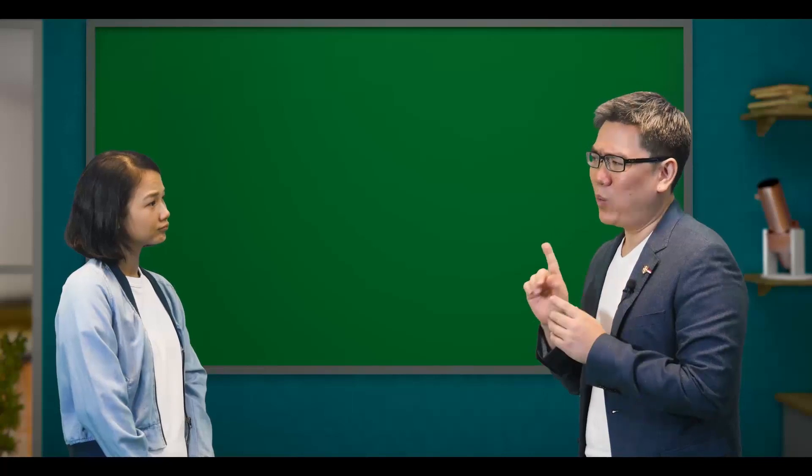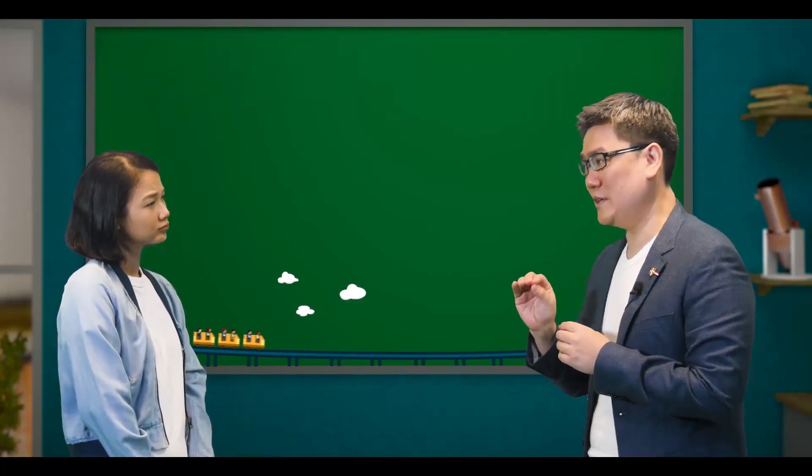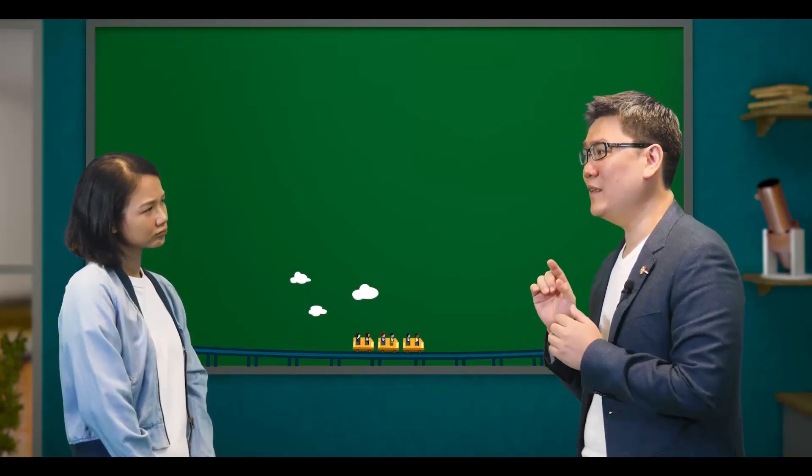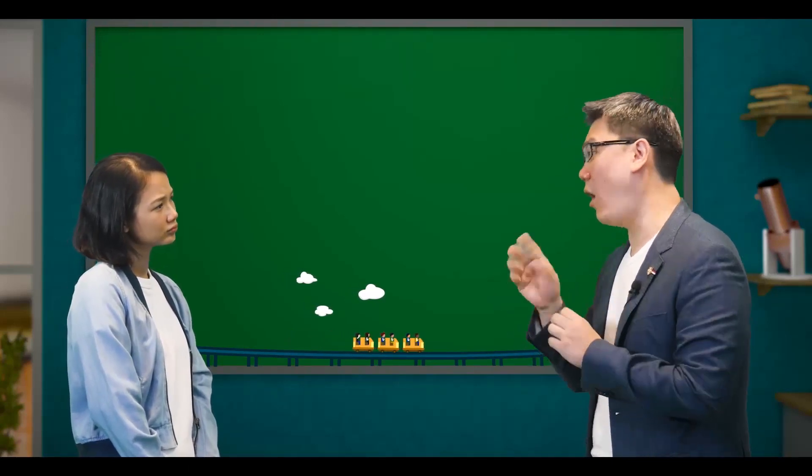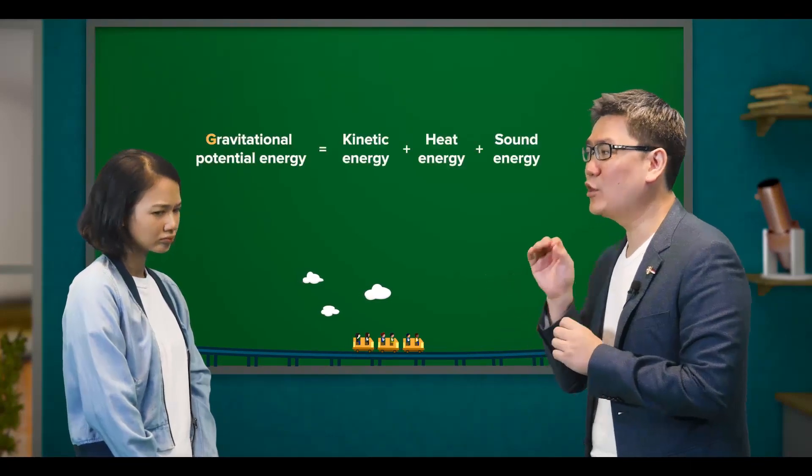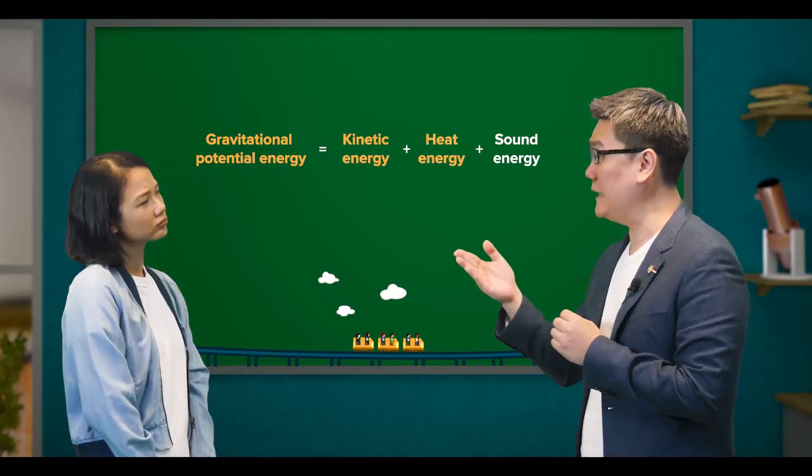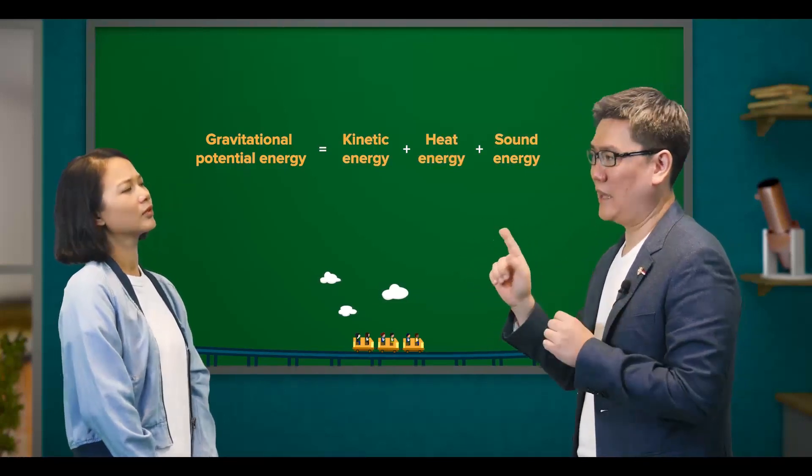Which is why the roller coaster will slowly come to a stop on a flat track, even when there is no brakes on it. In other words, gravitational potential energy is converted into kinetic, heat and sound energy.